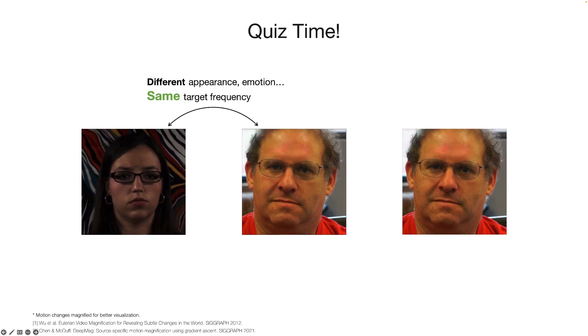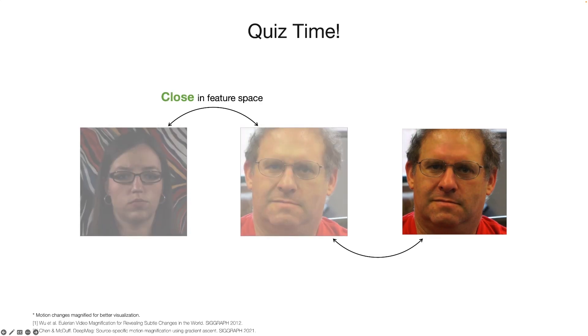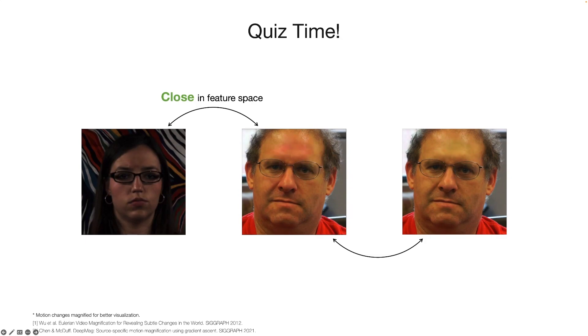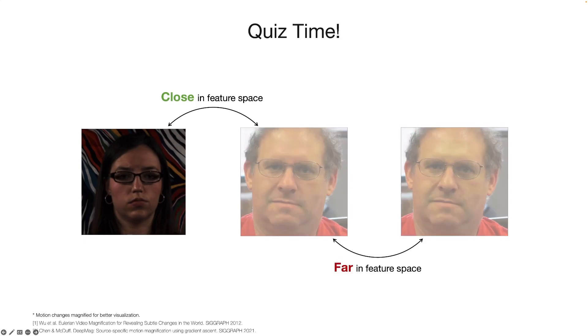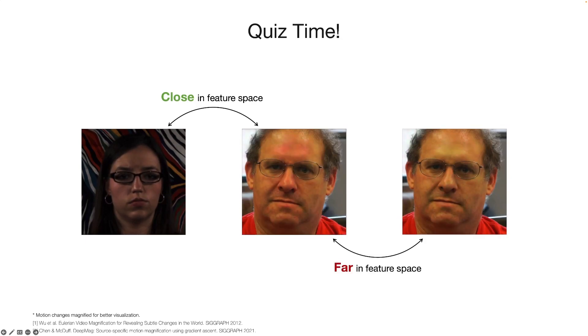Again, despite that the first two videos have different appearances, the underlying heart rates are actually the same. And the last two videos have different heart rates, despite being very similar in appearance. Again, for the ideal learned representations, the first two should be close, while the last two should be far away in the representation space.